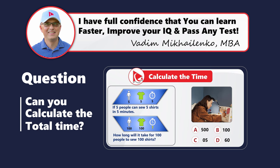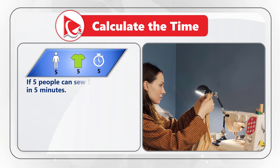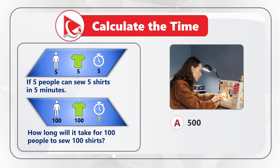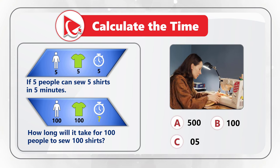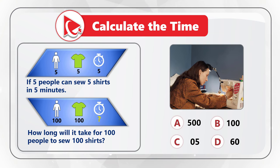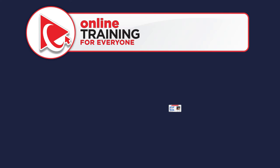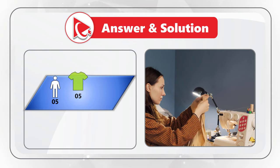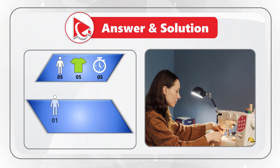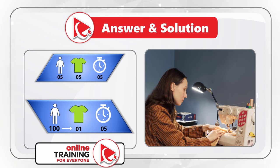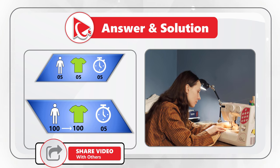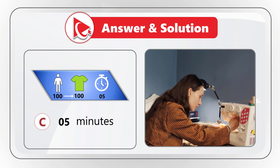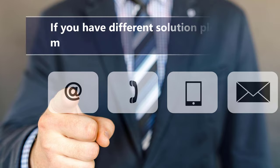Here's a very interesting question that might make you think. If five people can sew five shirts in five minutes, how long will it take for 100 people to sew 100 shirts? The choices are: A — 500 minutes, B — 100 minutes, C — 5 minutes, and D — 60 minutes. Here's the trick: if five people can sew five shirts in five minutes, then one person can sew one shirt in five minutes. If 100 people work together, scaling up the same rate, it will take 100 people just five minutes to sew 100 shirts. The correct answer is choice C — 5 minutes.